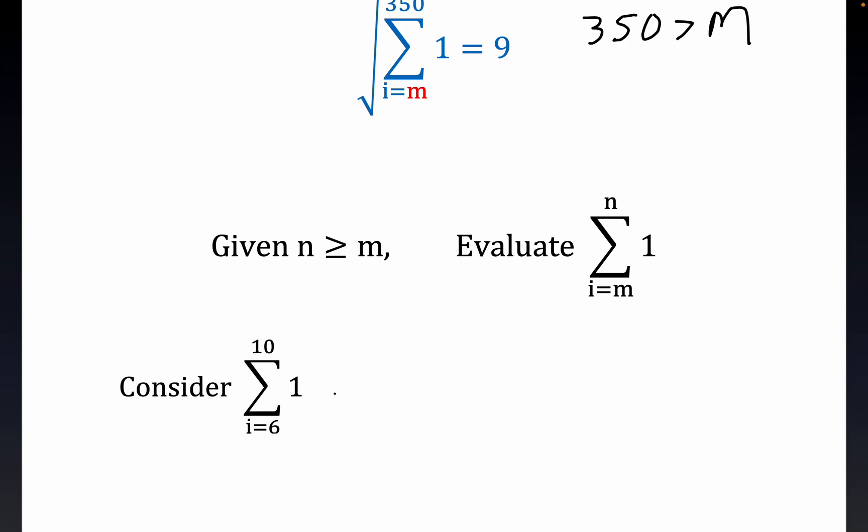For i equals 1 we would get 1. Excuse me, for i equals 6 we would get 1, and I'll just write it underneath 6, and then 1. These can be confusing, and I remember when I first looked at this noticing, wait a minute, where's the i? But you don't need an i.